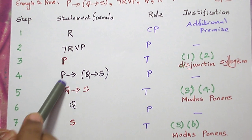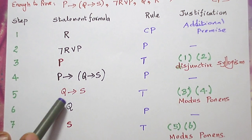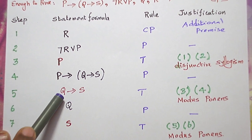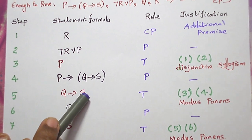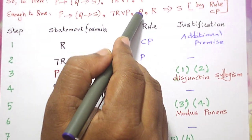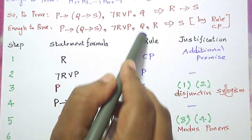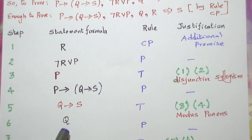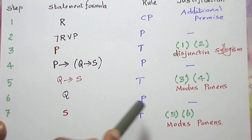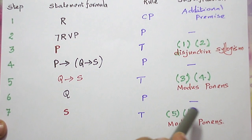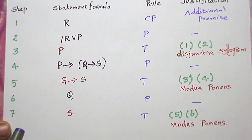Now let us introduce a statement formula that involves either Q or S. We have a statement formula that involves Q, so let me introduce that formula. Q is introduced by rule P, which needs no justification.